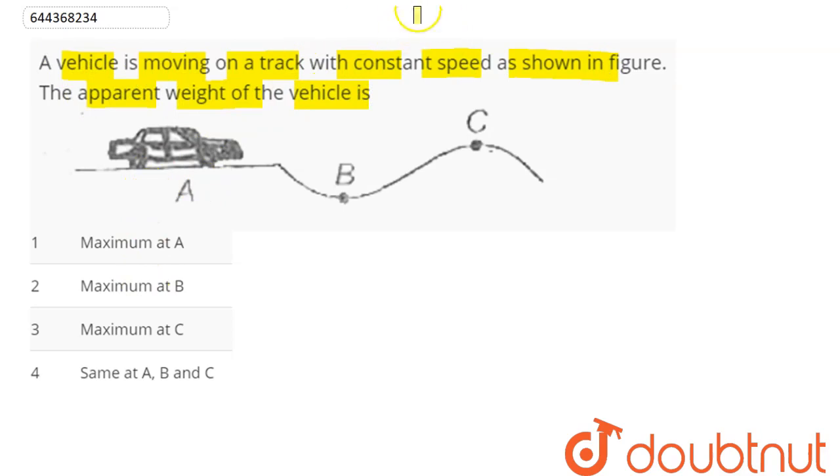Apparent weight here means the normal reaction supplied by the surface. Hence at point A, weight mg will act downwards and normal reaction is along upward direction. So normal reaction or apparent weight at A is equal to mg, which is equal to true weight.